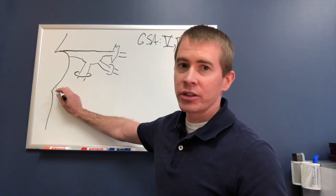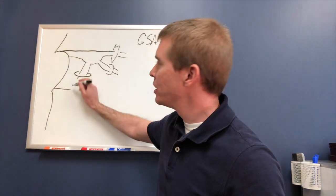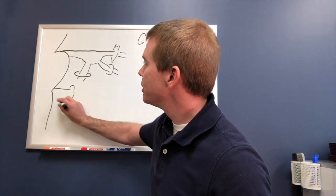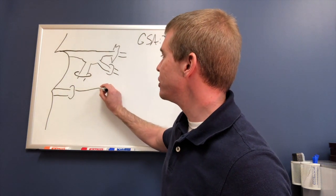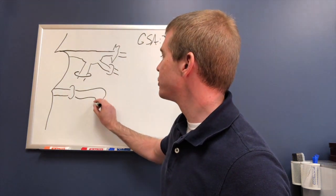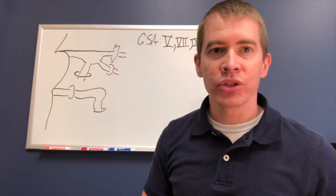Then at the pontomedullary junction, we have cranial nerve 7, facial, which enters the internal auditory meatus to travel into the facial canal, which travels down and opens up into the stylomastoid foramen.